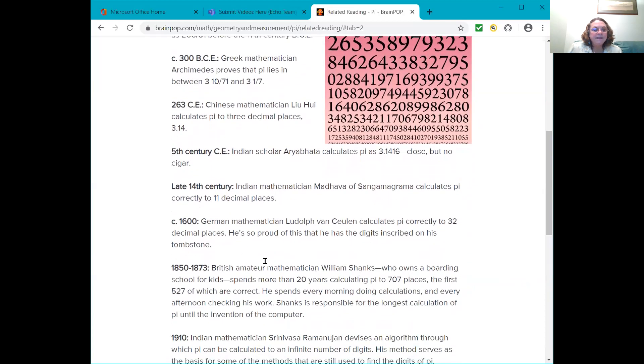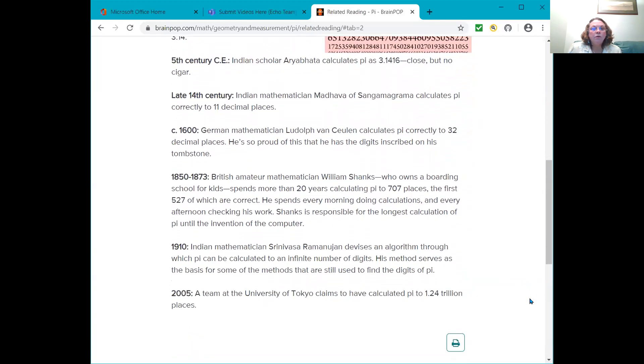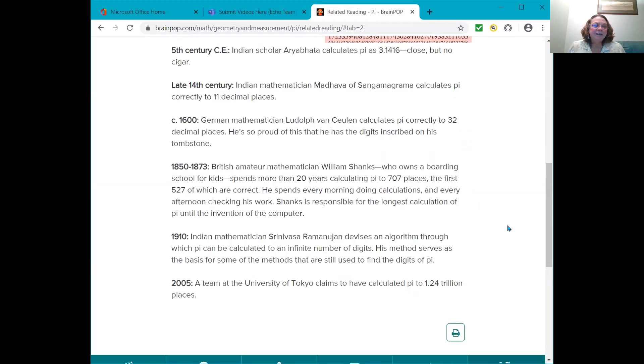In C, 1600, German mathematician, Ludolf van Ceulen calculates Pi correctly to 32 decimal places. He's so proud of this that he has the digits inscribed on his tombstone. That's funny.